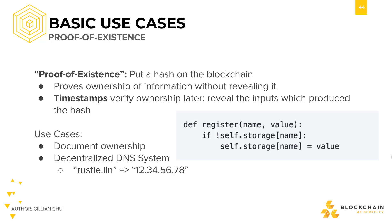By doing so, we have now proved the existence of some piece of information at some point in time. With proof of existence, we leverage both the public auditability and immutability of the blockchain.